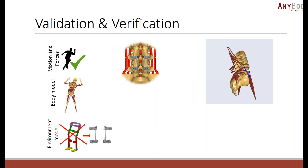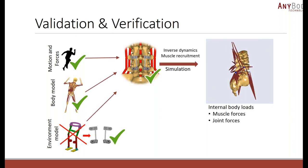For example, we can check the input to the system. We can check that the human body model produces good results on simpler tasks without medical devices — for example, that it produces good results for normal motions such as walking, lateral bending, and flexion. We can also verify that our product, which in this case could be a medical device, works according to specifications, and then check that all components together are working well with each other.